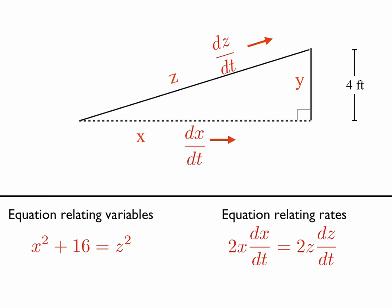And just note, of course, that the derivative of 16 is 0. And you might ask how we got the 16. If you look at the figure again, because of the Pythagorean theorem, x² + y² = z². But in this case, the y is equal to 4. So 4² is 16.